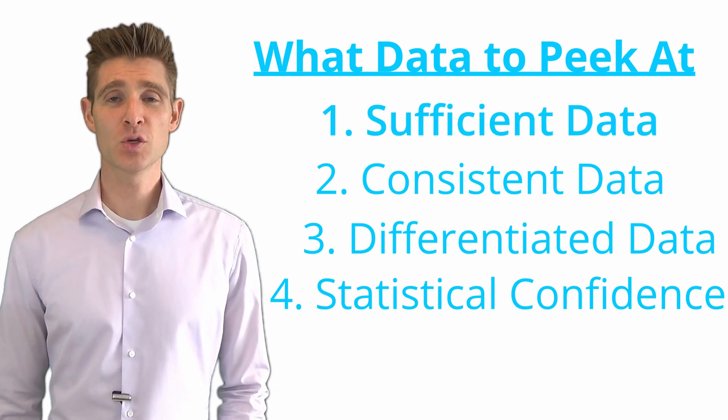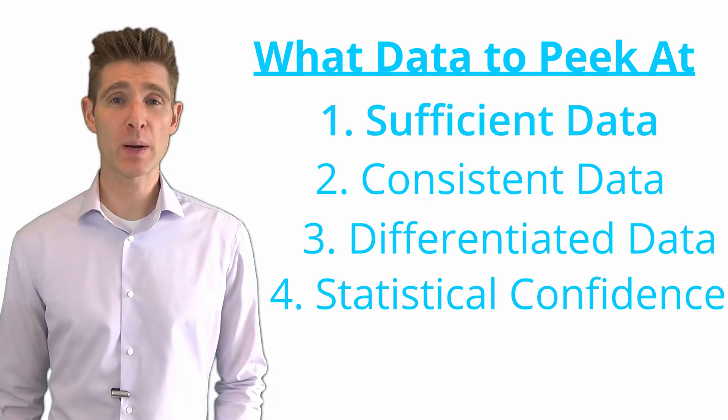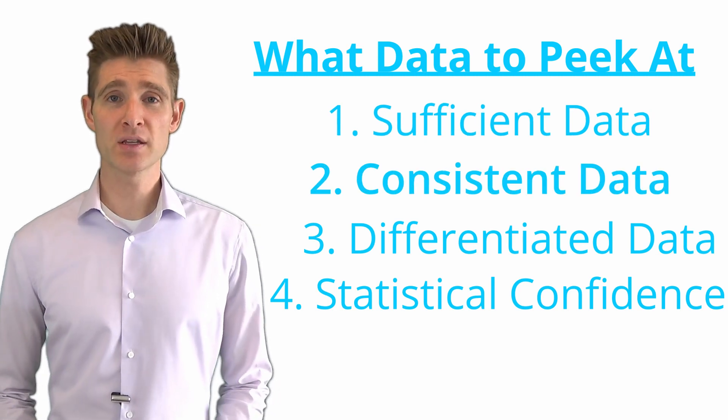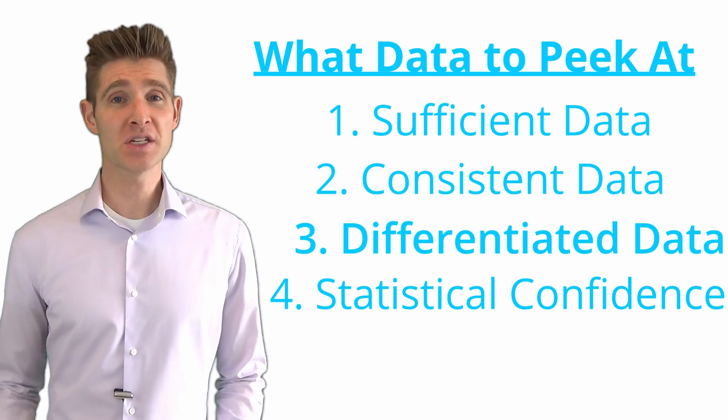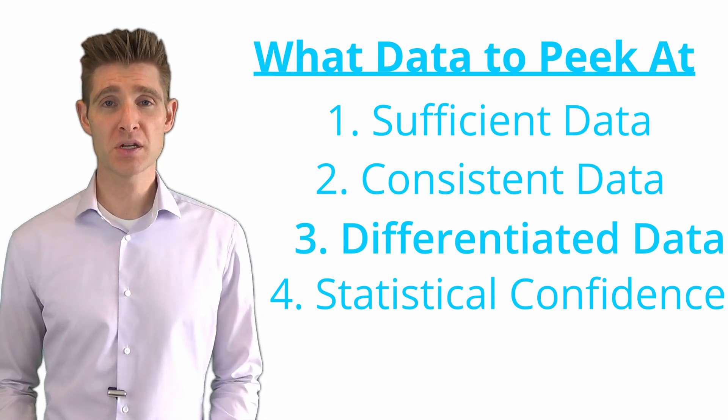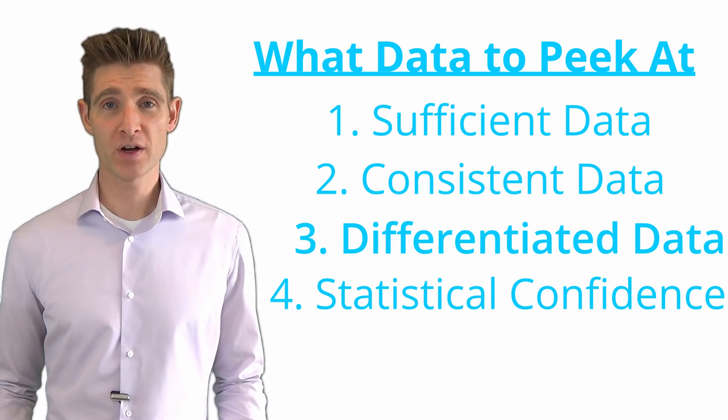So sufficient data means that you have enough people in your test, enough representative sample population. Consistent data means the trend is clear and there's a consistent winner for at least five days. And differentiated data means that your data, your lift percentage, is more than due to natural variance. So those are the things to look for. Again, look at my other video if you want more details.